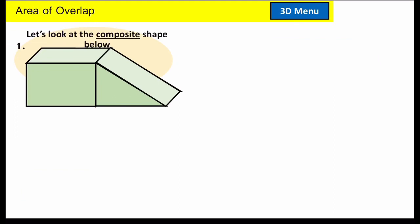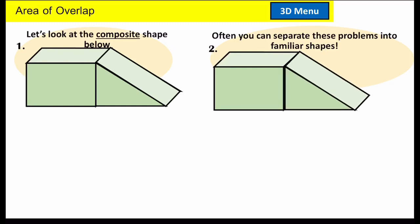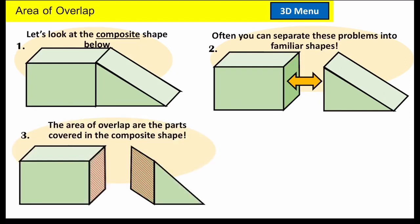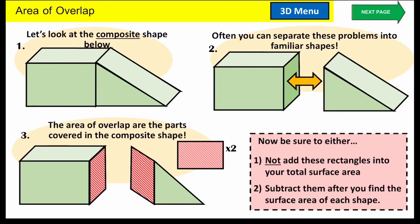Here's a composite shape. You're going to first separate the pieces, and you'll see that I have a rectangular prism and a triangular prism. Then you expose your area of overlap — the area that was covered when the pieces were together. You can see that we had a rectangle here and a rectangle here that was covered. Two rectangles of the same size need to be either not added when you solve this problem, or subtracted after you solve it. You can either not add these two rectangles when solving each the rectangular prism and the triangular prism, or just subtract them after you've taken the surface area of each shape, added them together, then subtract your area of overlap.